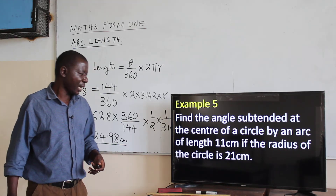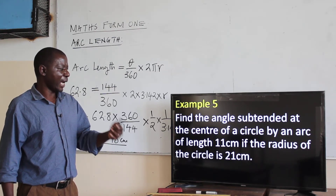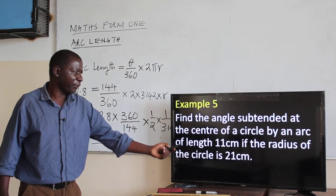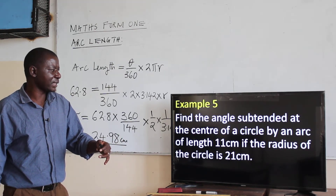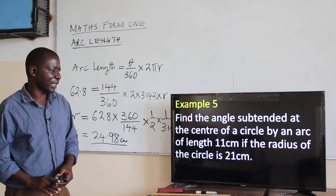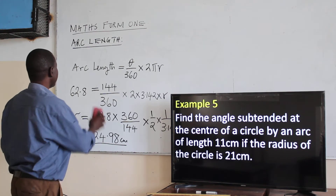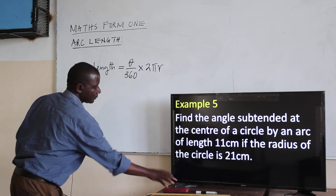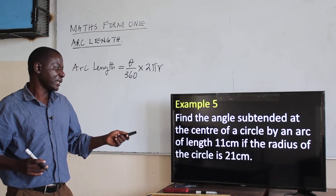Now another example: find the angle. We have already found the arc length and the radius. Now, how do we find the angle? Find the angle subtended at the center of a circle by an arc length of 11 centimeters, if the radius of the circle is 21 centimeters. This time, we need to find the angle that subtends that arc length of 11 centimeters, with a radius of 21 centimeters.